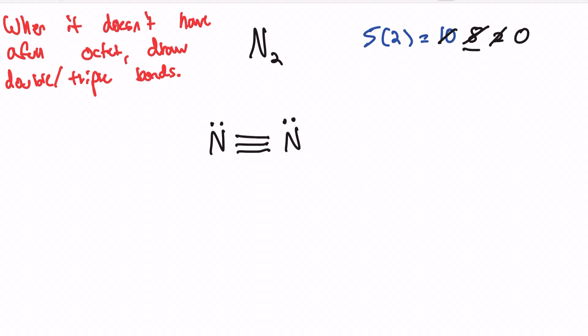Let's now calculate the formal charge for the dinitrogen molecule. Using our formula: nitrogen has five valence electrons because it's in group 15. Subtracting its three bonds and its two lone electrons gives us a final answer of zero. We get the same answer for the other nitrogen, since we've drawn both identically. Each nitrogen has a full octet and a formal charge of zero, so this is the best Lewis Dot diagram for dinitrogen.